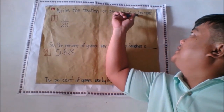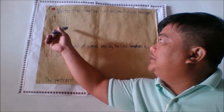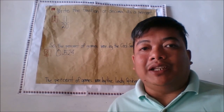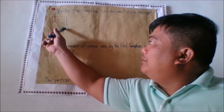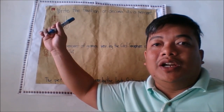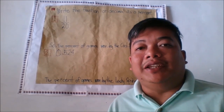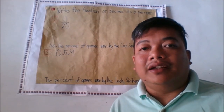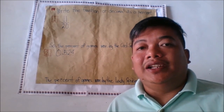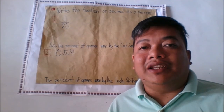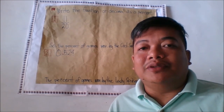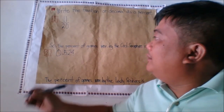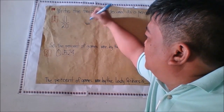Write the fraction or decimal as a percent. To change the fraction 11/20 to percent, find the equivalent fraction with a denominator of 100 by multiplying with a fraction equal to 1. Think of a number that when multiplied with the denominator results in 100. This number will also be multiplied by the numerator.